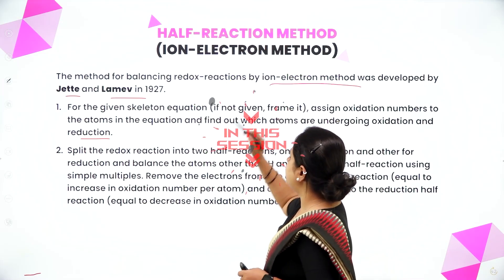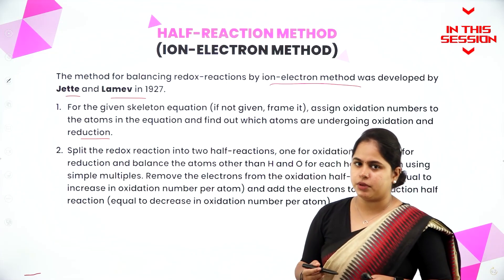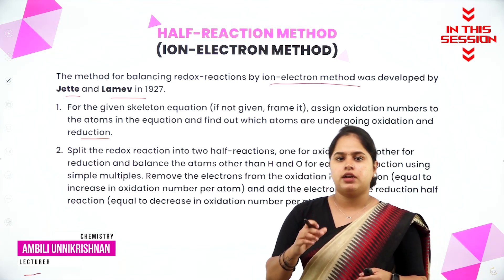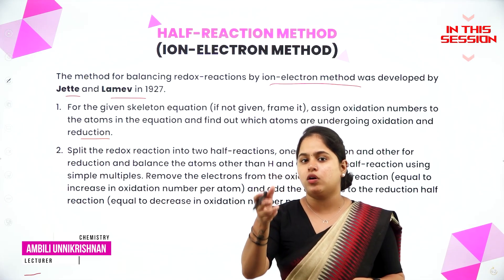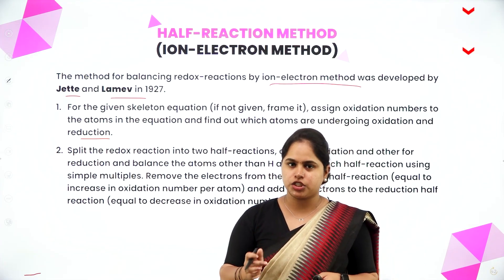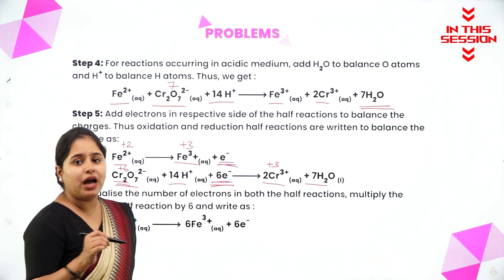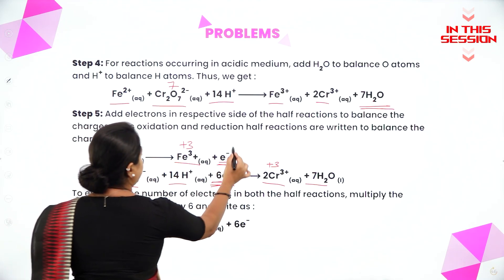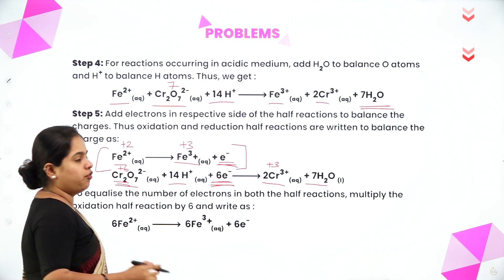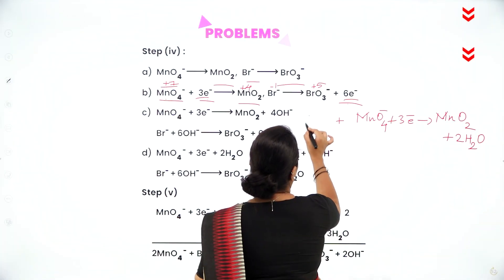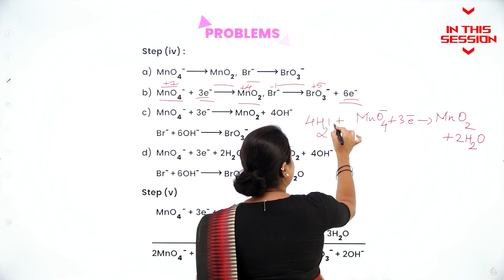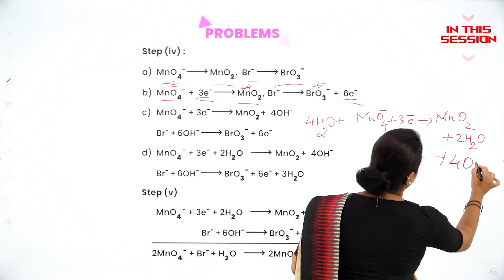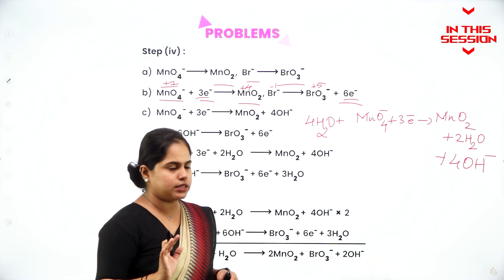The method itself is called the half reaction method or ion electron method. What we are going to do in the next step is split the reaction into two different reactions: one will be the oxidation half reaction and the other one will be the reduction half reaction. To balance the number of electrons, we multiply the oxidation half reaction by 6 and add 4H₂O. Again, to balance this 4H₂O, the exact number of OH⁻ ions is added on the other side.